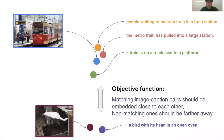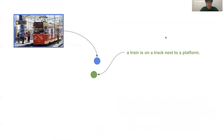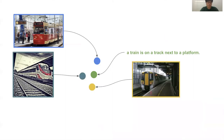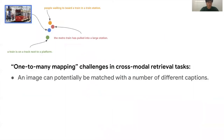One problem of Cross-Modal Retriever task is one-to-many correspondence. For a caption, 'a train is on a track next to platform,' it can potentially be matched with multiple images. We focus on this problem.